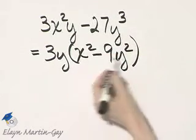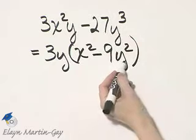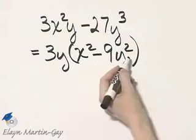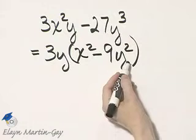Check. Make sure there are no factors common here other than 1 or negative 1, and that's true, and also check by multiplying.